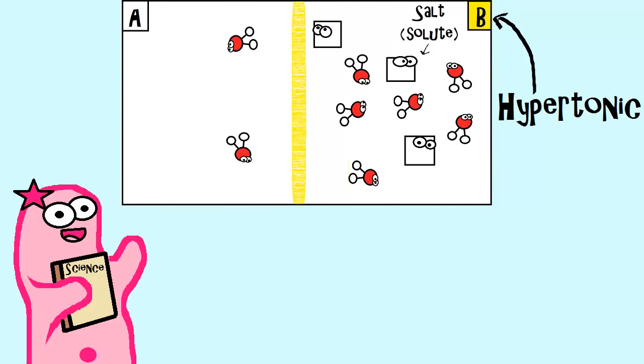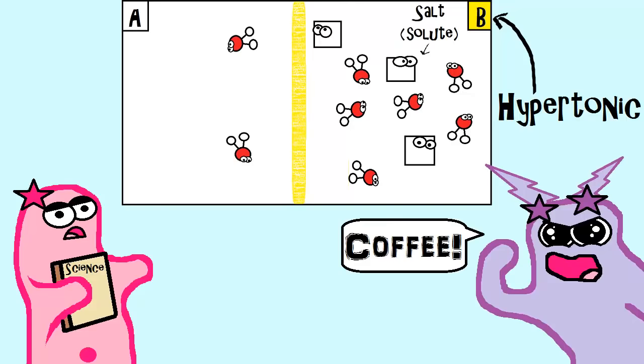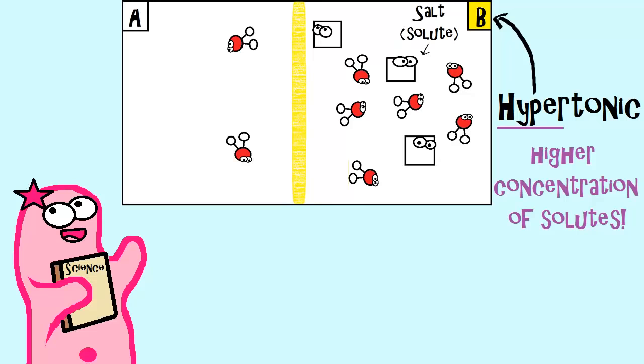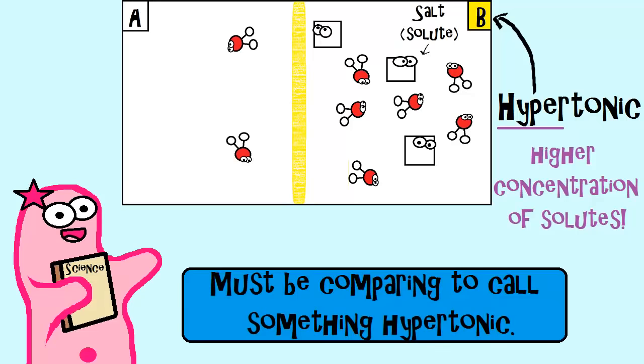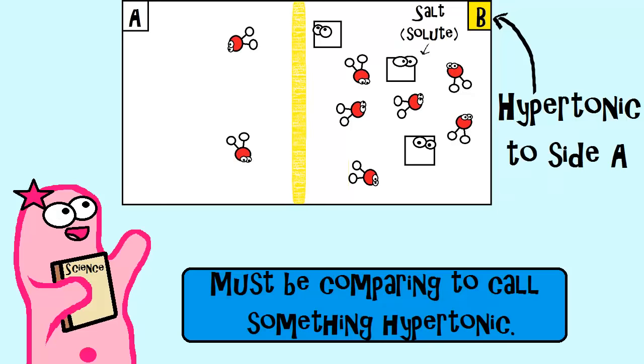You know that prefix hyper when you think of a hyper person? Well, that helps me think of a high amount of something. For a hyper person, it might be caffeine. But in our case, it means a high solute concentration. But we can't just say something is hypertonic without comparing it to something else. We say that side B is hypertonic to side A because it has a greater solute concentration than side A.